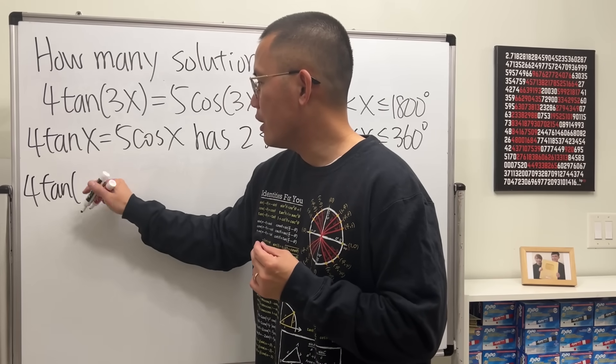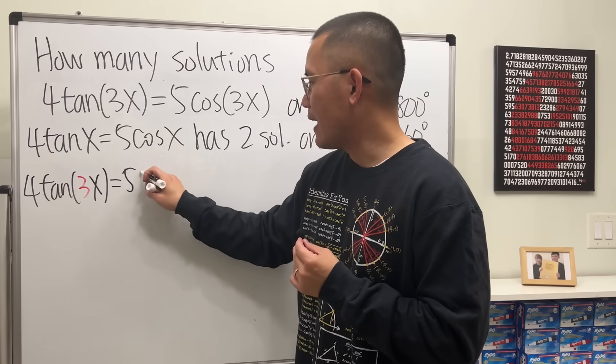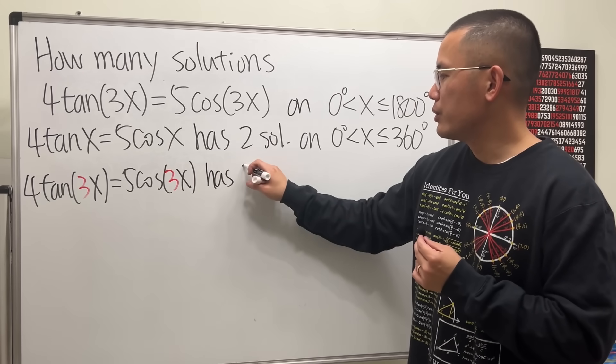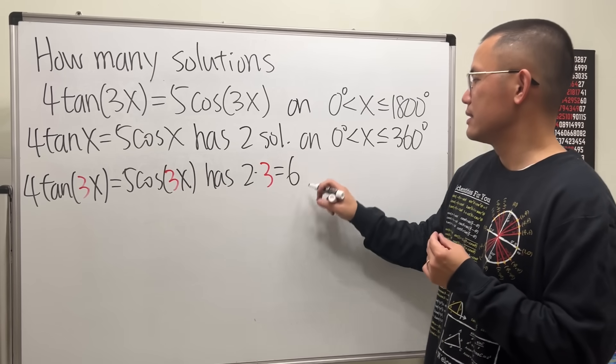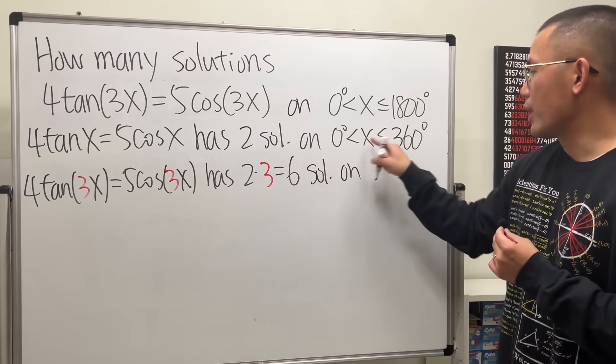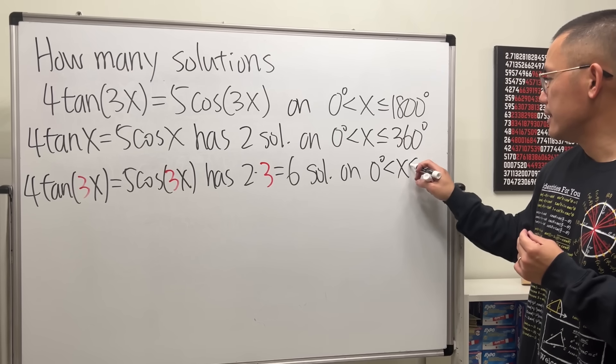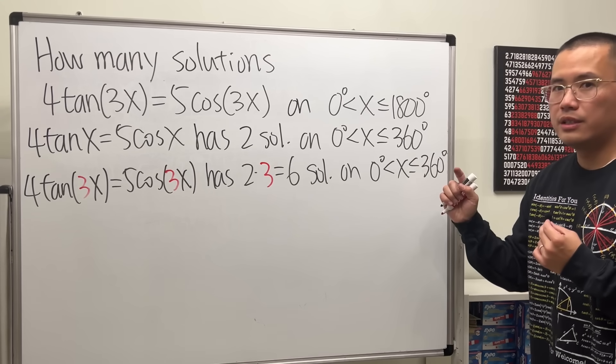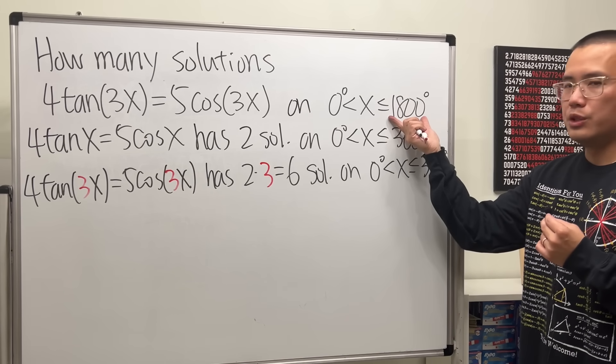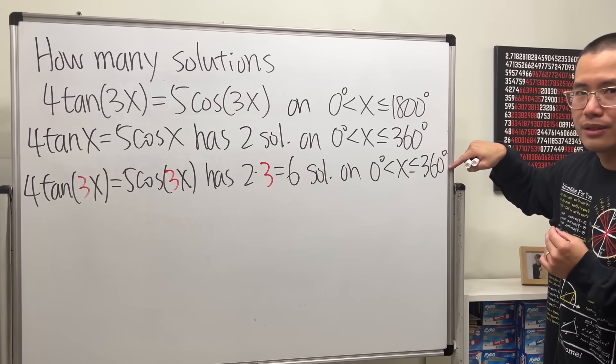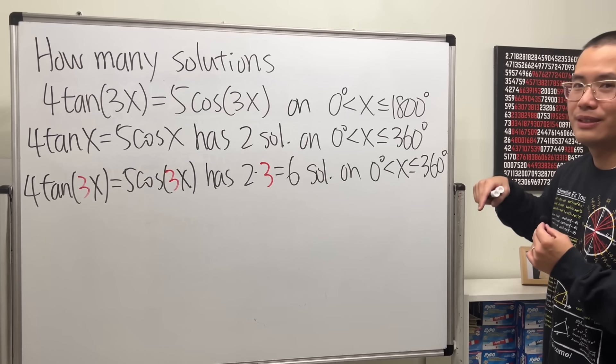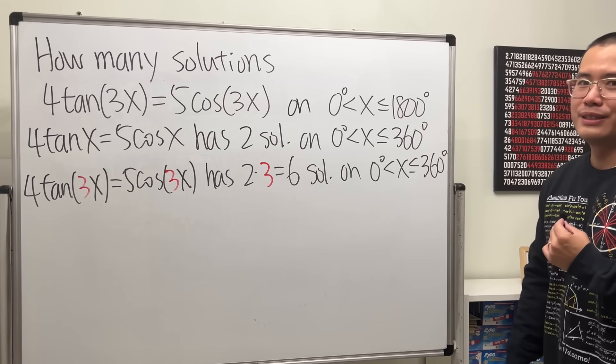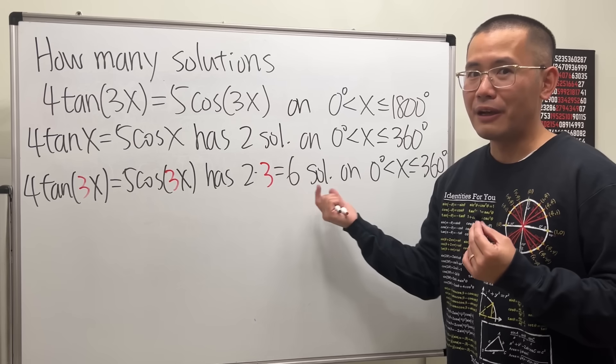So, 4 tangent of 3x equals 5 cosine of 3x. This equation will have 2 times 3, which is six solutions on the same interval right here, 0 and 360 degrees. But we are not looking at from 0 to 360 degrees. This is 1,800 degrees. Well, this and that, what's the connection? This is five times more than that. Well, it's five times as much as this. This is five times that. So all we have to do is multiply the six by five. That's all.